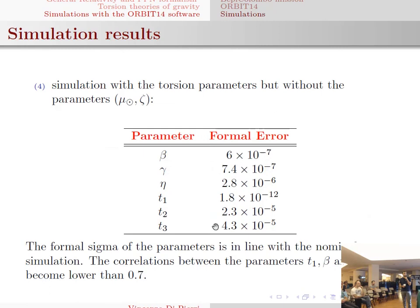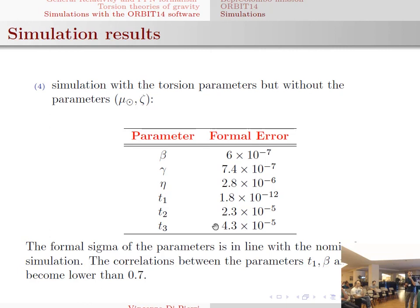The other way is to eliminate from the solve-for list the parameters mu and zeta of the Sun, treating them as constants. As you can see, the results for the parameters beta and gamma are the same as in the nominal simulation, and the correlations are in line with that simulation as well. In conclusion, I have shown that it is possible to test this kind of torsion theories with our software in the context of the Bepi-Colombo mission, and these results represent an improvement over the analytical estimates that can be obtained from the theory.